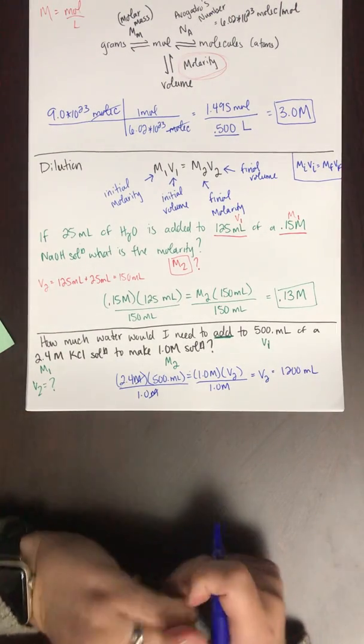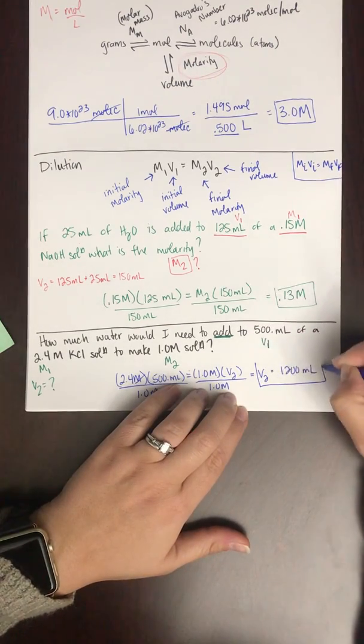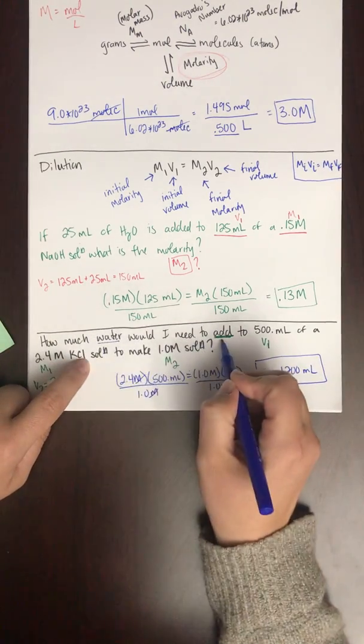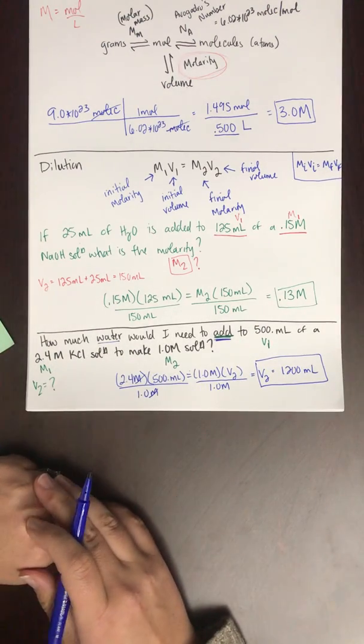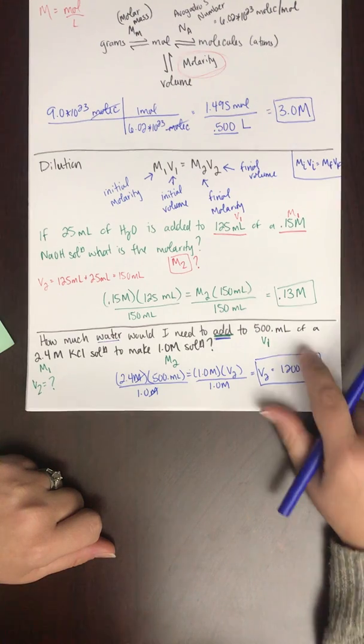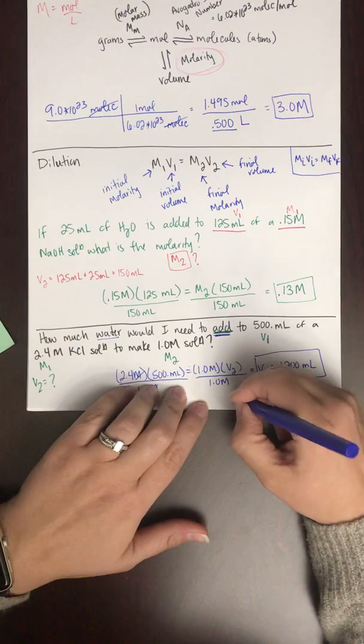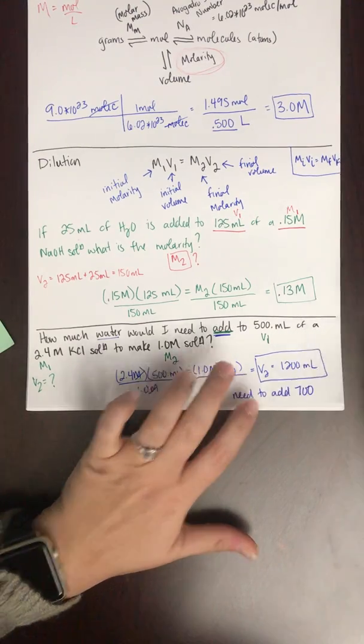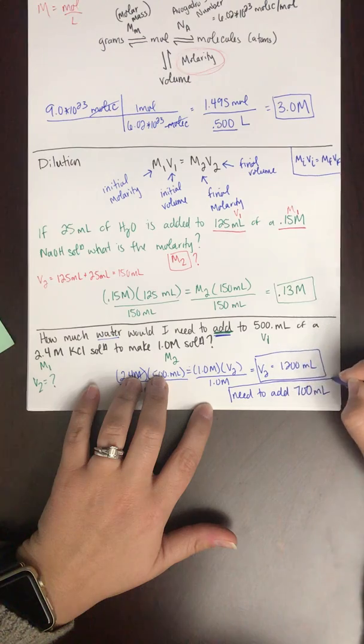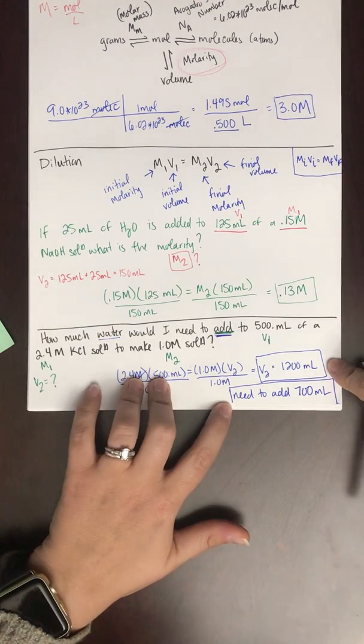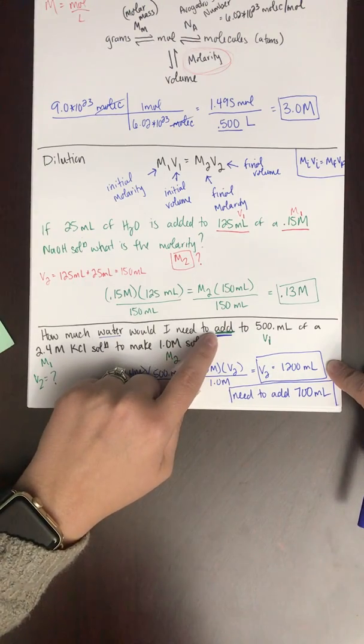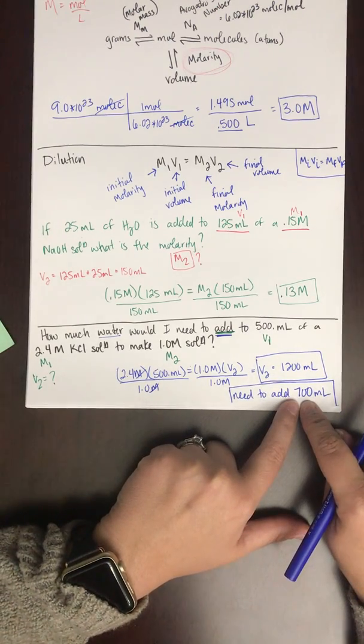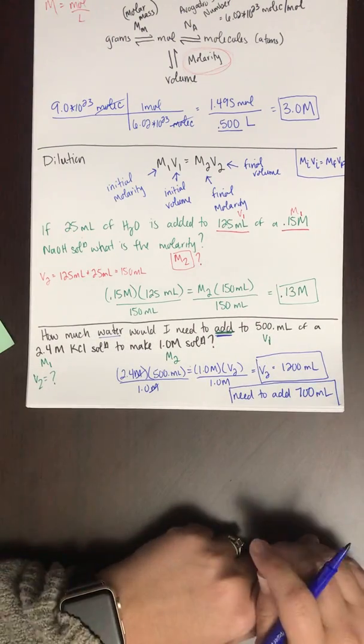So if the question asked, what is V2? Here is my answer. V2 is 1,200 milliliters. But that's not what the question asked. The question asked, how much water would I need to add to 500 milliliters to get this? So if you need 1,200 milliliters and you're starting with 500 milliliters, the true answer to this question is you would need to add 700 milliliters. So make sure you're reading the questions carefully because sometimes the answer that you get from the formula is not really what the question is asking. So V2 in this situation, the final volume is 1,200 milliliters. You needed to add 700 milliliters to go from 500 to 1,200. So this is really the answer to the question.